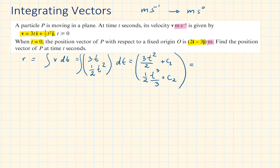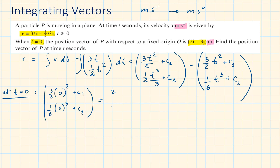Let's simplify this. We are going to follow our clue: t is equal to 0. The displacement, or the position vector of P with respect to a fixed origin O — that is the vector OP — is 2i minus 3j. So let's substitute t equal to 0 so we can work out the unknown constants c1 and c2. From here we can see that c1 is equal to 2 and c2 is equal to negative 3.